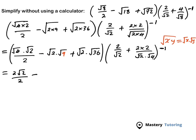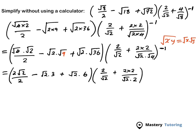So the square root of 2 times 9 is going to be square root of 2 times square root of 9. And then this is going to be square root of 2 times 3, because square root of 9 is 3, plus square root of 2 times square root of 36 — and square root of 36 is 6. Put it under brackets, and then 2 over square root of 2, plus 2 times 2 over square root of 2 times 2, to the power of negative 1.